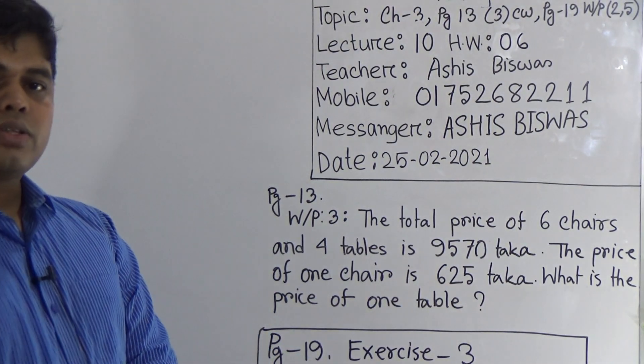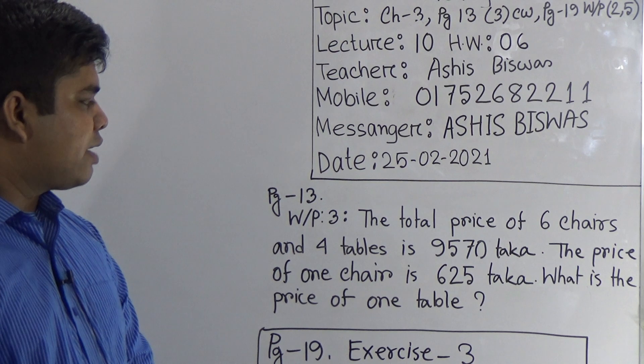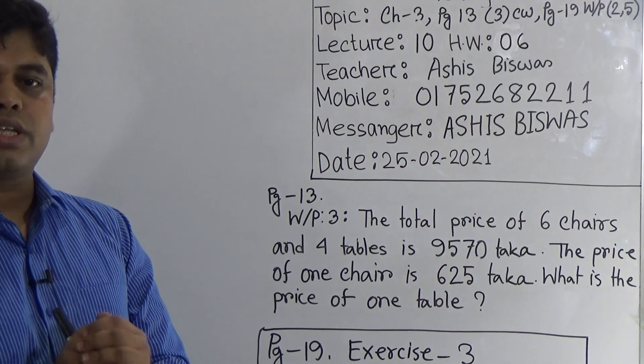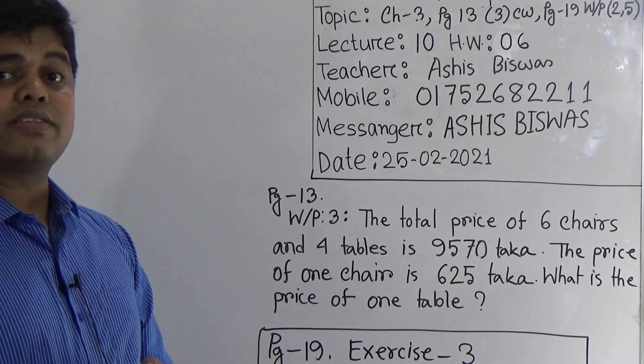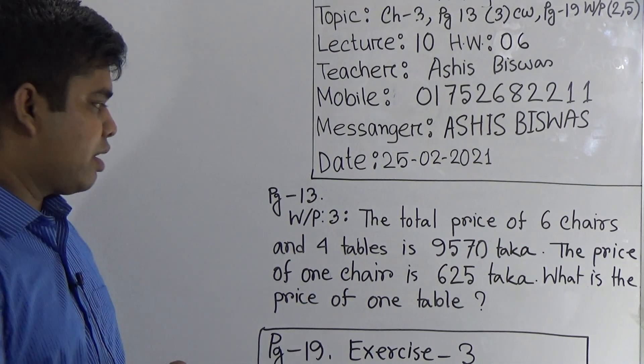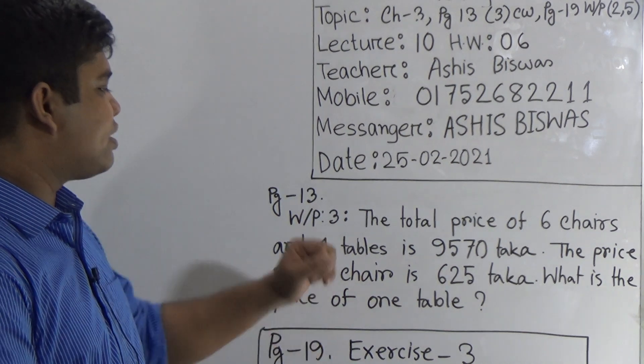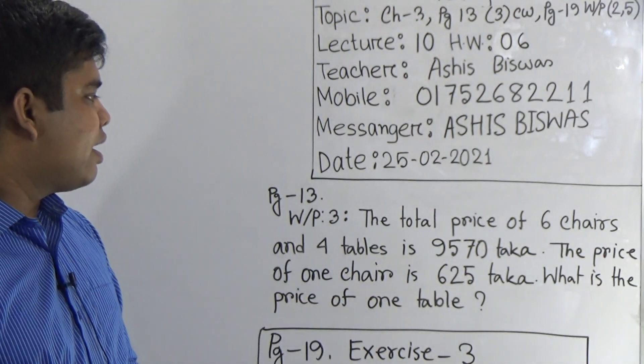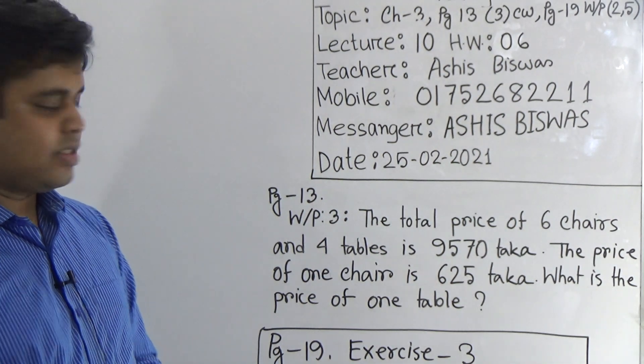So we need to find out the price of one table. My dear students, when we need to solve a problem, at first we need to make a plan. If we can make a plan, then it is easier for us to solve this math. So here the price of one chair is given. So from this information, we can find the price of 6 chairs.